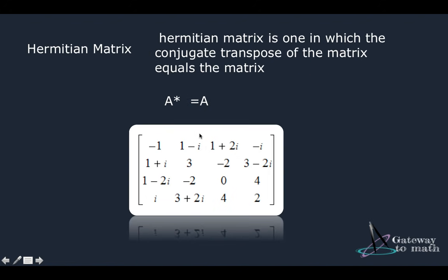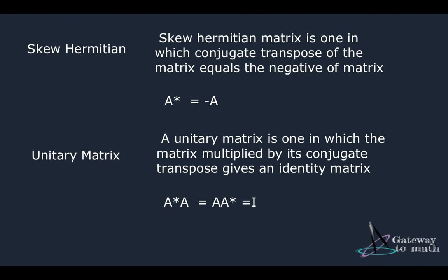And then Hermitian matrix is one in which the conjugate transpose of the matrix equals the matrix itself. So here's one example, but you can just keep it in mind what exactly a Hermitian matrix is. A skew-Hermitian is one in which the conjugate transpose of the matrix equals the negative of a matrix.